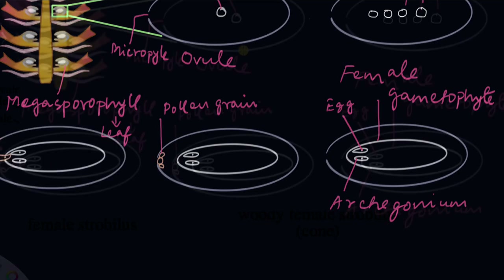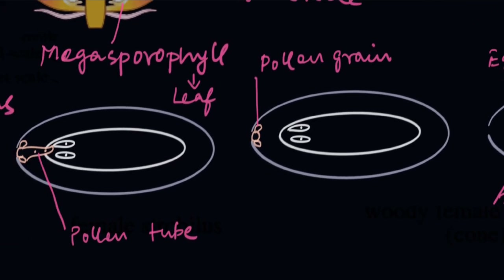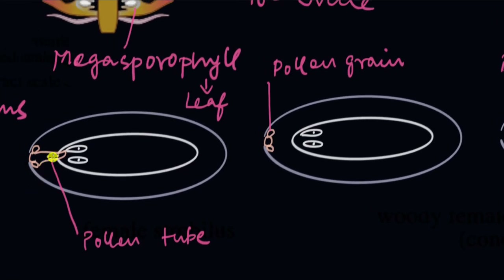When the pollen grain arrives and sits at the base of the ovule, it germinates. This forms the pollen tube. Inside the pollen grain there are two male gametes. The pollen tube grows and reaches one of the archegonia, and one of the two male gametes fuses with the egg in the archegonium. This is how the zygote is formed.